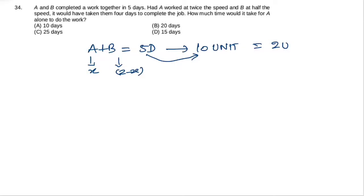Now if A works at double efficiency, A does 2x work. And if B works at half efficiency, then instead of (2-x), B will do (2-x)/2 work. This work is completed in 4 days.